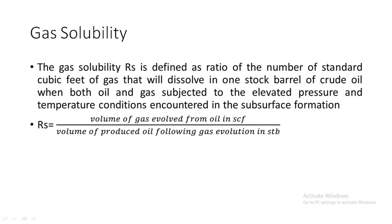Gas solubility is represented by R sub S. In general, it refers to the amount of gas which is dissolved in crude oil. The proper definition is: the ratio of the number of standard cubic feet of gas dissolved in one stock tank barrel of crude oil. So within that one stock tank barrel, how much gas is dissolved — that is gas solubility.